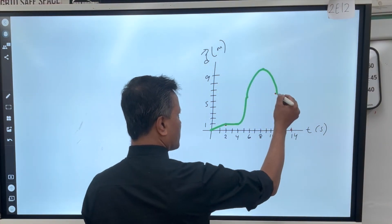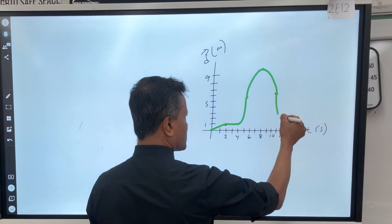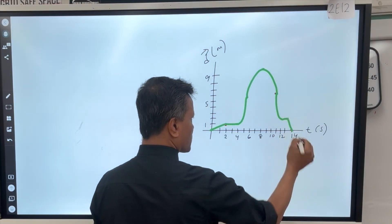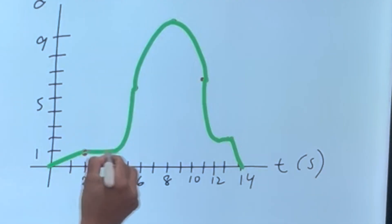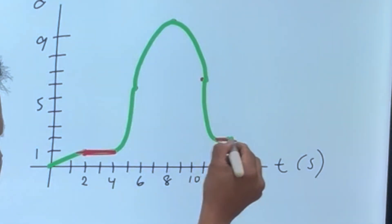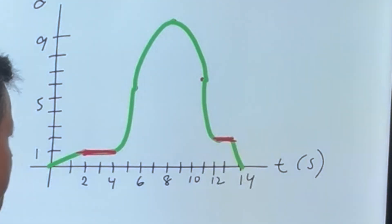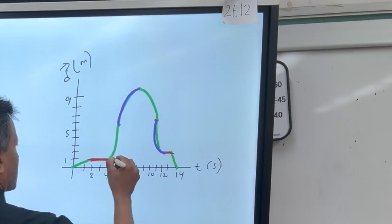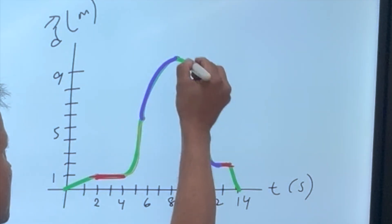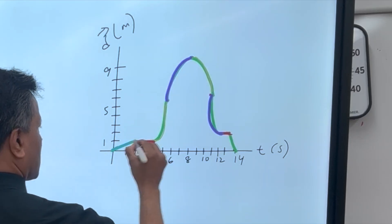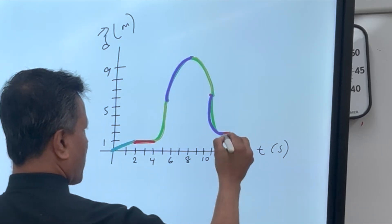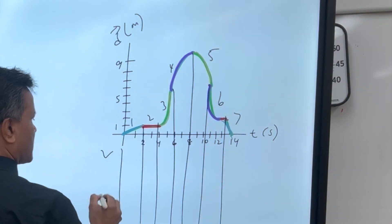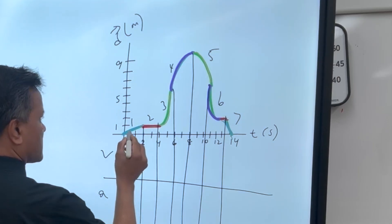And then you are slowing down to zero, and then you remain at rest. And then you move with constant velocity. This is at rest, this is at rest, this is slowing down, this is slowing down, this is speeding up, this is speeding up — moving forward — and this is moving backward.